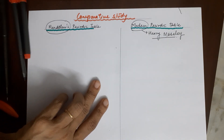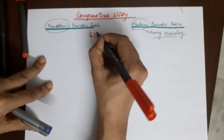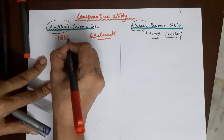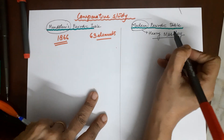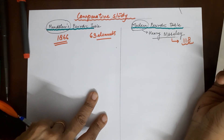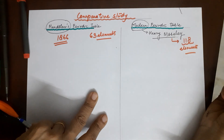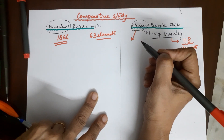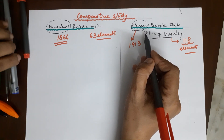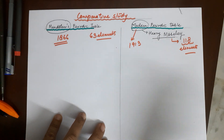Mendeleev's periodic table had only 63 elements and was made in 1866, whereas the modern periodic table can presently place 118 elements and beyond. The modern periodic table was constructed by Henry Moseley in 1913, which means approximately 47 years after Mendeleev's, during which time this table was developed with definite advantages.